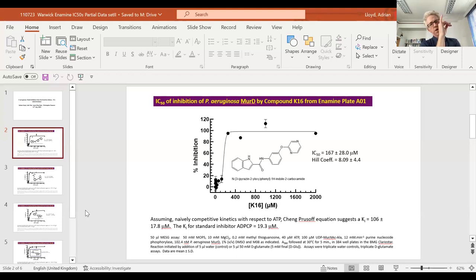Quick question: does the Hill coefficient tell you anything about whether your molecule is a covalent inhibitor? No, it can tell you under certain circumstances how many molecules are actually involved, for example hemoglobin and oxygen with a Hill coefficient of four, but in this particular case no.